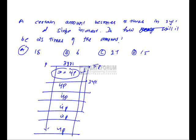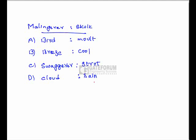Six into 4P will become 24P. For every 4P it is taking 3 years, so 3 into 6 is totally 18 years. So the answer is option A. Next, analogies: malinger and skulk.